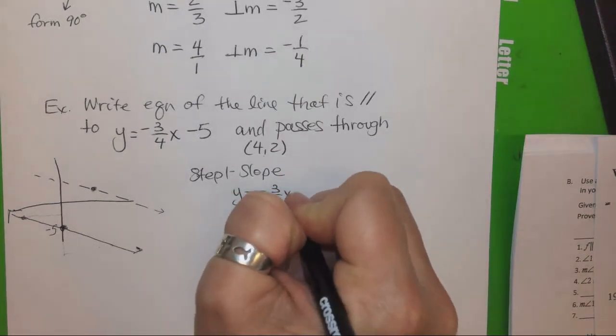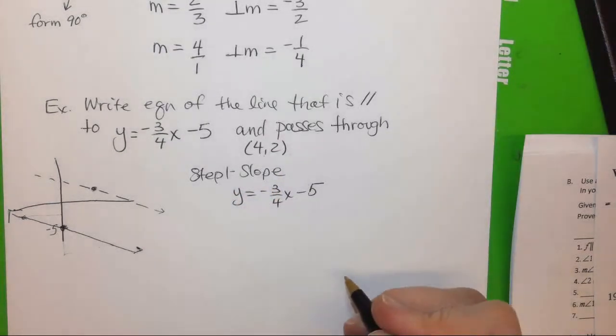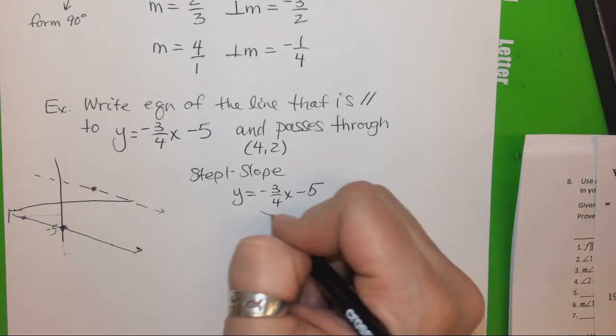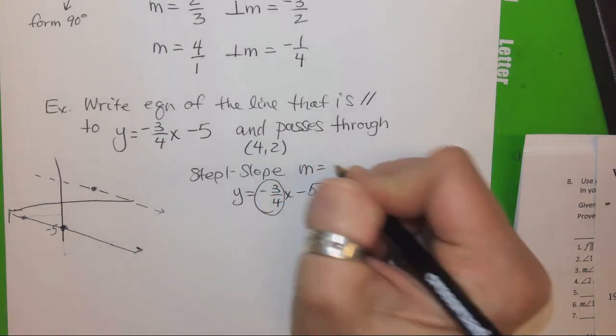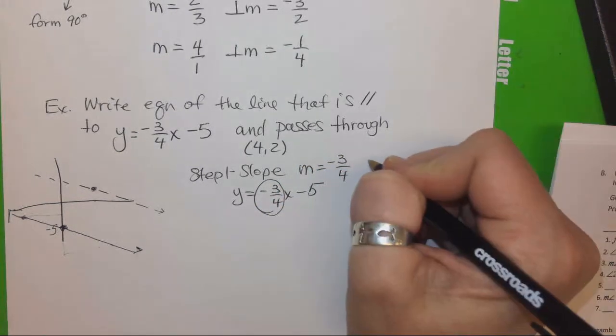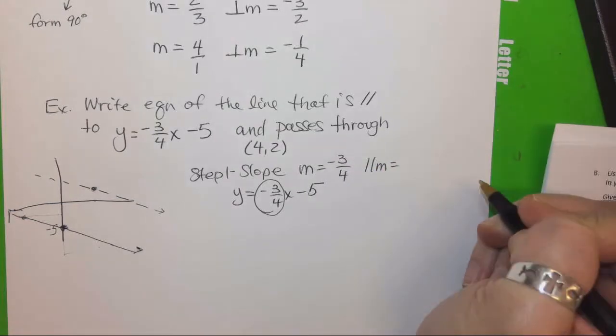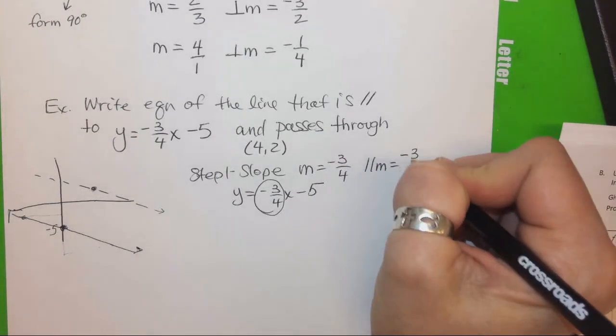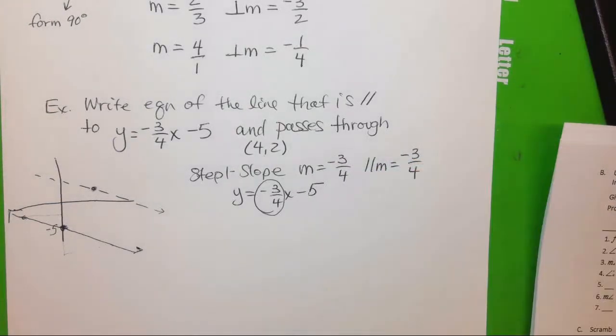So we're going to use y equals negative three-fourths x minus five. What is the slope of that? Negative three-fourths. So my slope is negative three-fourths. So what's the parallel slope there? Same thing. So that's step one.